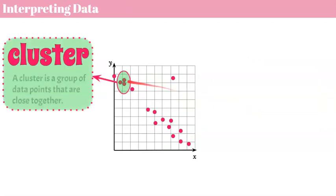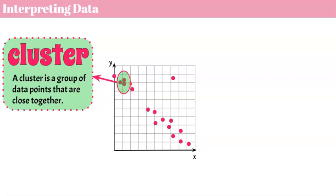Now we're going to talk about interpreting the data. First we're going to talk about a cluster. You can see that all my data is pretty well almost all the same distance apart from each other, except right here it looks like I have three points really close together. I usually tell students they have to have three or more pieces of data really tight, with no other pieces of data that close together, in order to call it a cluster. A cluster is a group of data points that are close together.